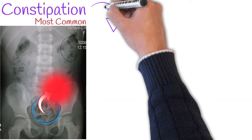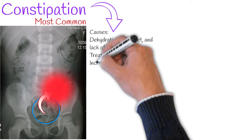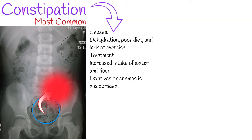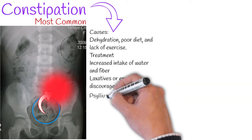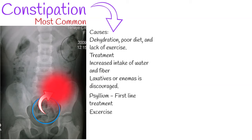The common causes of constipation are dehydration, poor diet, and lack of exercise. Treatment of constipation involves increased intake of water and fiber, either dietary or as supplements. The routine use of laxatives or enemas is discouraged. Soluble fiber supplements such as psyllium are generally considered first-line treatment for chronic constipation. Regular exercise can also help improve chronic constipation.